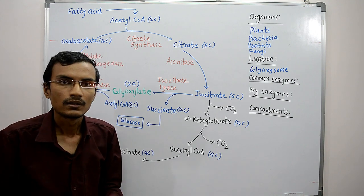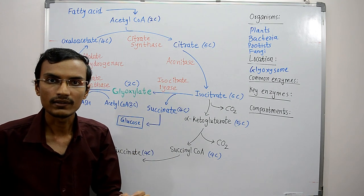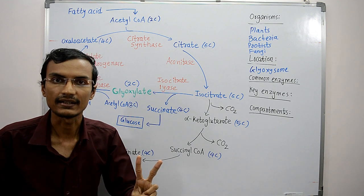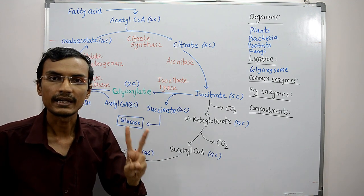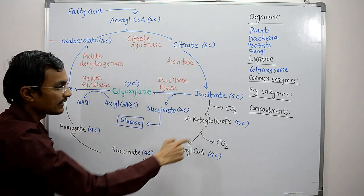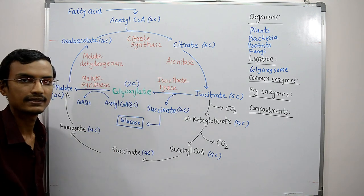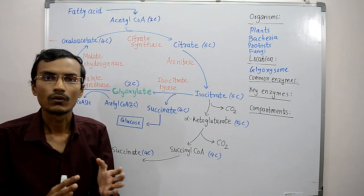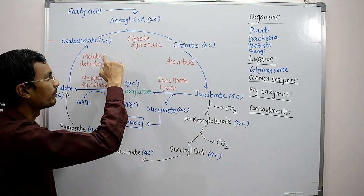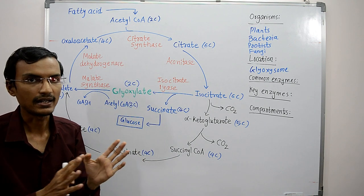For the net conversion of carbohydrate from fatty acid, reactions of two cycles occur — the glyoxylate cycle and the citric acid cycle. The common enzymes shared by both cycles are citrate synthase, aconitase, and malate dehydrogenase.